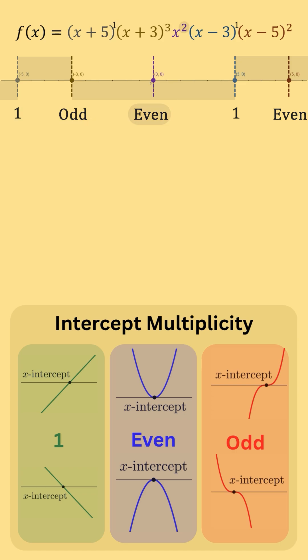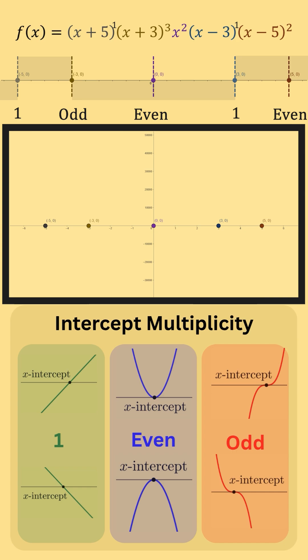The multiplicity of each x-intercept is known. Let's focus on the behavior of the x-intercepts as we graph our function. Starting from the left, we know our function will start off below the x-axis due to the sign chart being negative here. At x equals negative 5, our multiplicity is 1, so we cross the x-axis like a straight line.